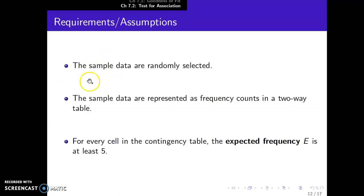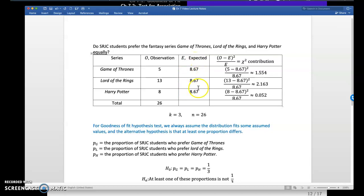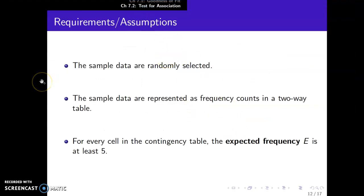The requirements are similar to goodness of fit. We need to have a random sample. The sample data should be able to be represented as a frequency count in a two-way or contingency table. And for every cell in the contingency table, the expected frequency has to be at least 5. And that reminded me, I forgot in the last example, right here we did have that—expected counts were all at least 5. So that's what that means. All of these values, the expected counts, need to be 5 or greater. The same applies here for the test for association.